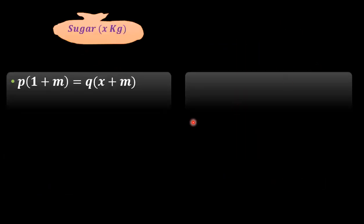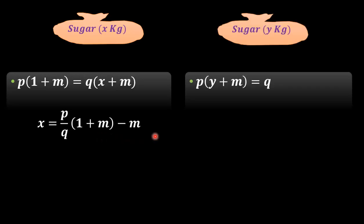So we have two equations. When he weighed sugar on the right side, the weight of the sugar will be x, that is x equals p/q(1 + m) - m. And in the second case, weight of the sugar is y, that is y equals q/p(1 + m) - m.